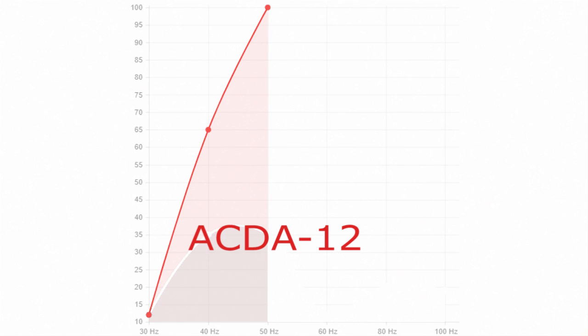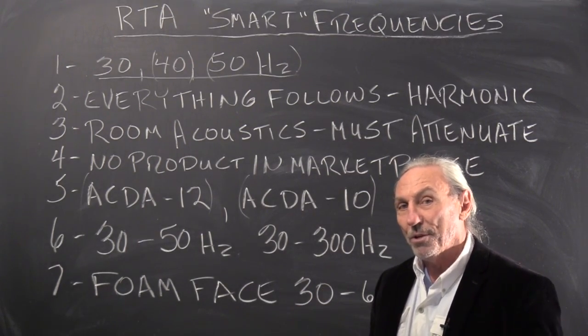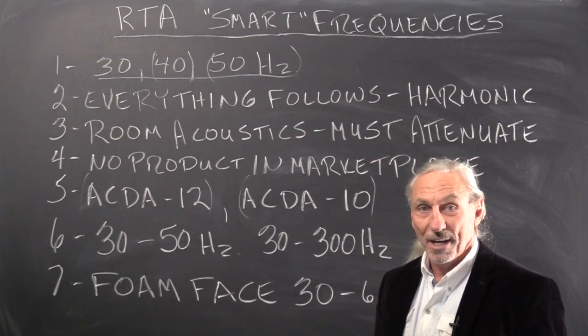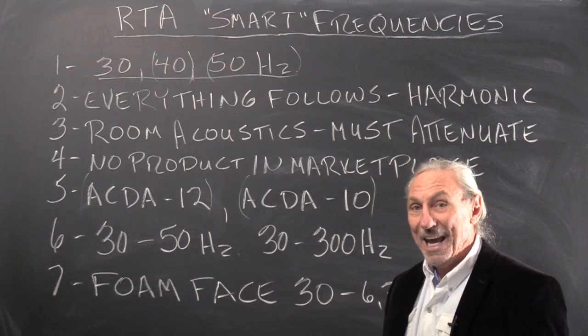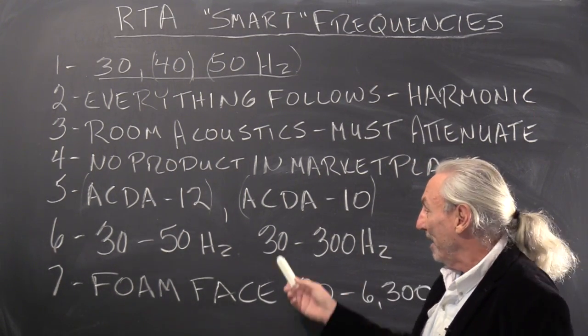Then its cousin, the ACDA-10, is more broadband. So we go after the 30, 40, 50 cycle energy, which is the basis for everything. And then what we don't get, which we're not going to get all of it, we bring in a broadband sponge from 30 to 300.